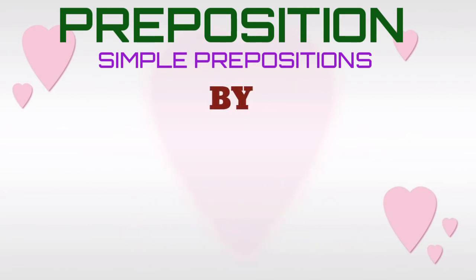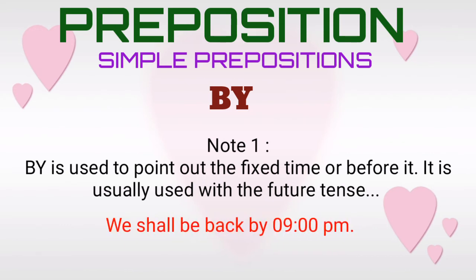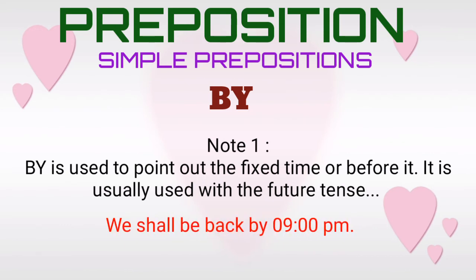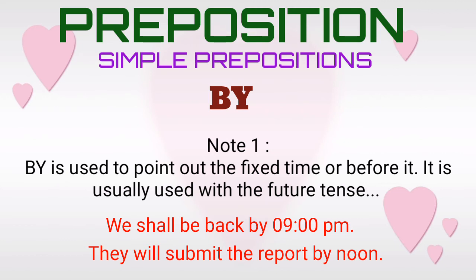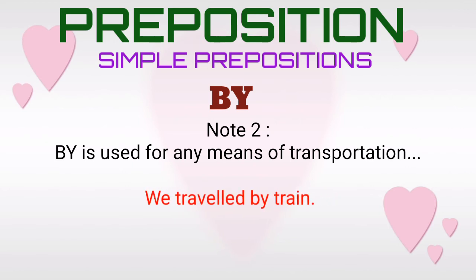Simple preposition 'by', note one. The simple preposition 'by' is used to point out the fixed time or before it. It is usually used with the future tense. For example: 'We shall be back by 9 p.m.' 'They will submit the report by noon.' Note two. The simple preposition 'by' is used for any means of transportation. For example: 'We travelled by train.' 'I always travelled by car.'